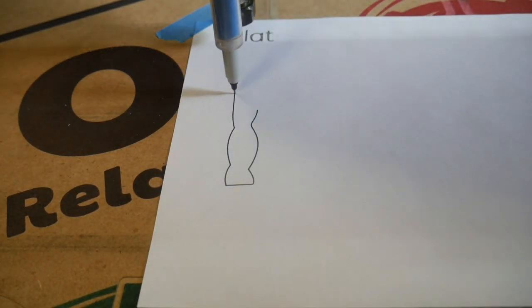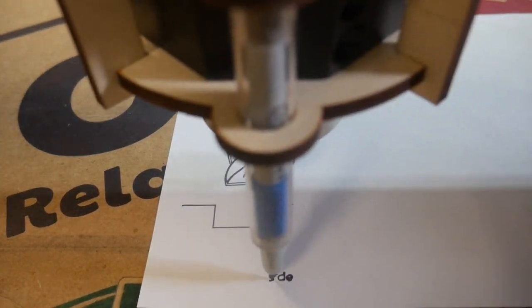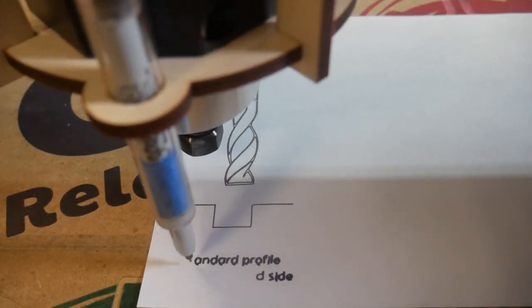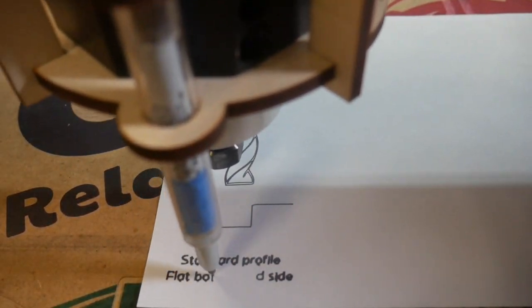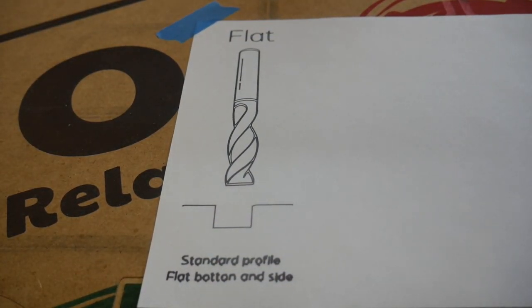But first, let's get an idea of the different kinds of bits we have available to us. These come in three basic types. First is the flat bit. This is what you're going to use for most of your cuts on CNC. It has parallel sides and a flat bottom. This is going to give you a very standard profile cut, straight down and flat on the bottom.